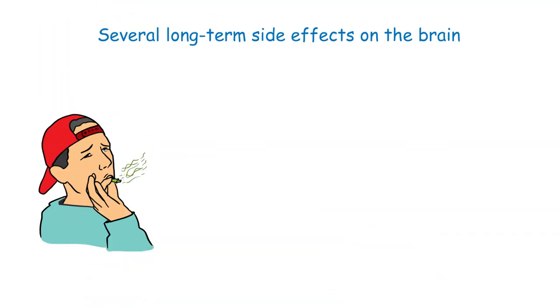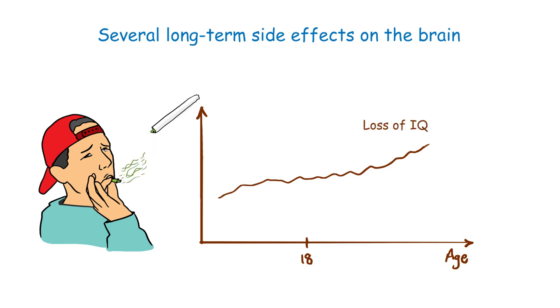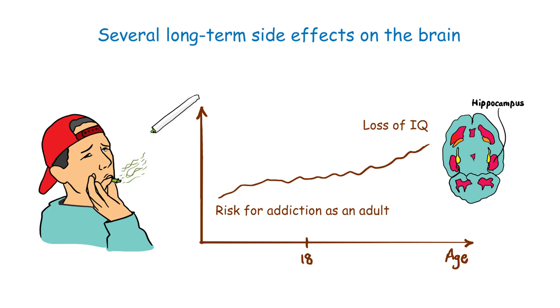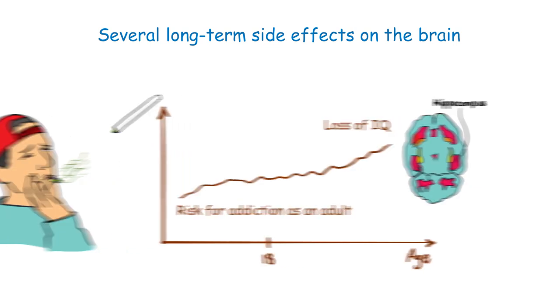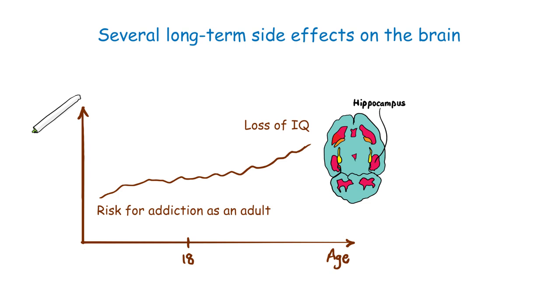Marijuana also has several long-term side effects on the brain, which are especially prevalent in individuals who use the drug before the brain is fully developed. Marijuana use in adolescence, and continued on into adulthood, may result in a loss of IQ points that are not recoverable even with abstinence. Also, initiating marijuana use before turning age 18 raises the risk for addiction as an adult. As a person ages, neurons in the hippocampus are naturally lost, and marijuana use may speed up this process, leading to memory problems, impaired coordination, learning issues, and sleep problems.